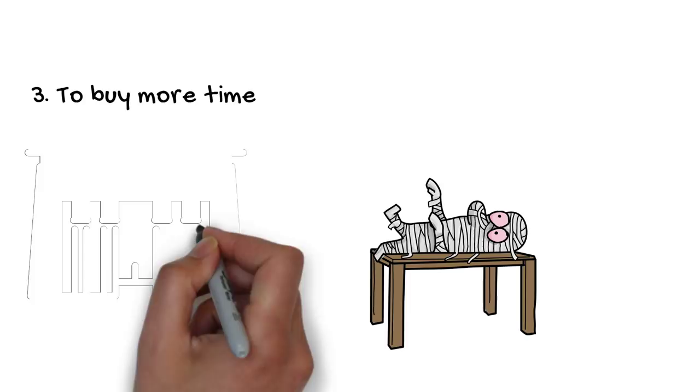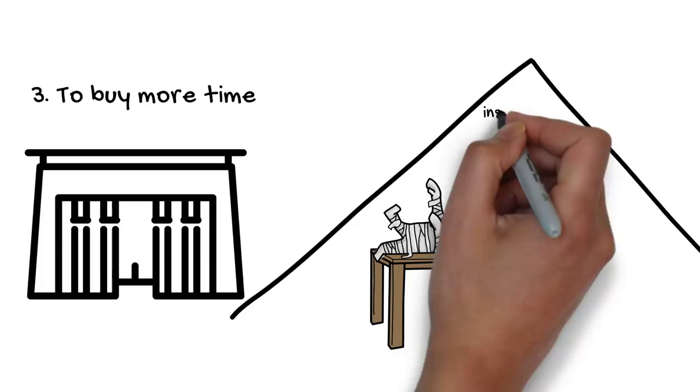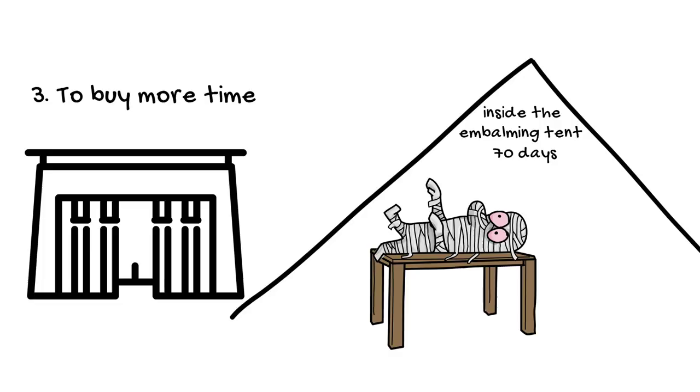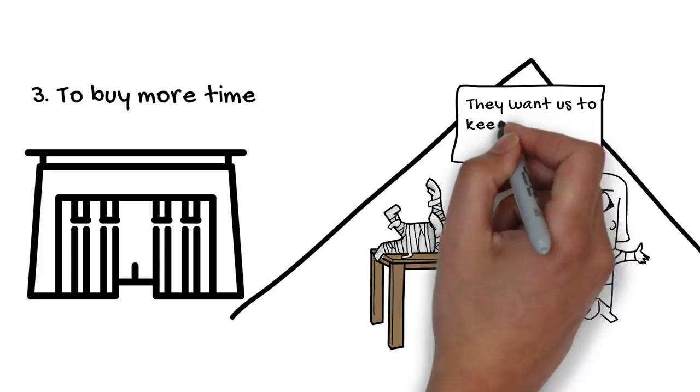The ideal length of time for embalming, including both drying out and wrapping the body, was 70 days. However, there are documented cases of people being buried much later than 70 days after death, even as long as 500 days.